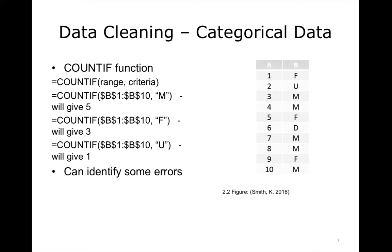You will probably have data that is not numeric, and so counts of how many times certain values occur can be very helpful in understanding the data and identifying errors. Take a look at this list of 10 patient genders. If we use the COUNTIF function on the range of cells B1 to B10, and specifically count how many M's there are, we will get 5. For F for female, we will get 3, and for U or unknown, we will get 1. Now we have a problem — 5 plus 3 plus 1 only adds to 9, and we have 10 records. There is an entry with a D in it, which may have been a data entry error. If working with thousands or millions of records, we would not be able to scroll through and look for incorrect records manually. We need additional tools.